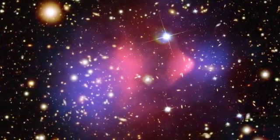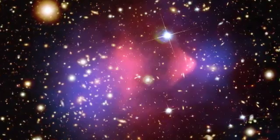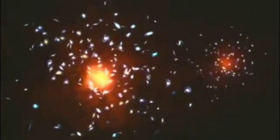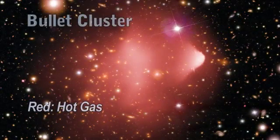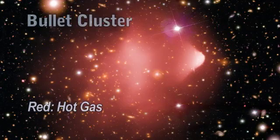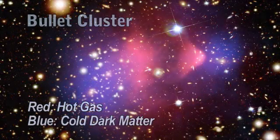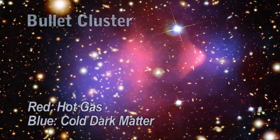There's one particular example, something called the bullet cluster of galaxies. Two clusters of galaxies have collided with each other. The galaxies, which are relatively small compared to the clusters, have mostly missed colliding with each other and have continued on their way. Ordinary matter, the gas that filled the clusters of galaxies, underwent a collision and remained more or less in the center of the pair of clusters and is now glowing hot from the effects of the collision.